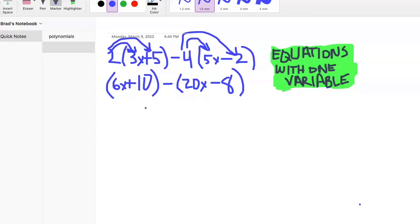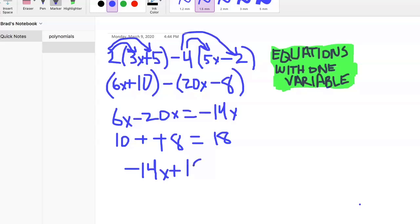We just need to combine like terms. We have 6x minus 20x and that's negative 14x. Then we have 10 minus negative 8. Remember when you have two negatives together that makes it a positive, is 18. So our answer is negative 14x plus 18.